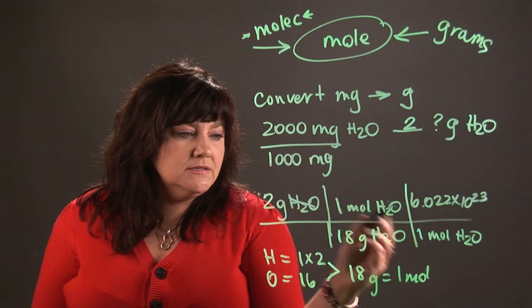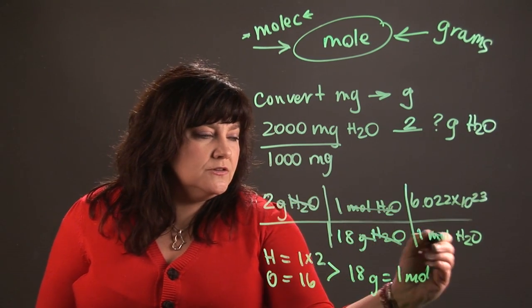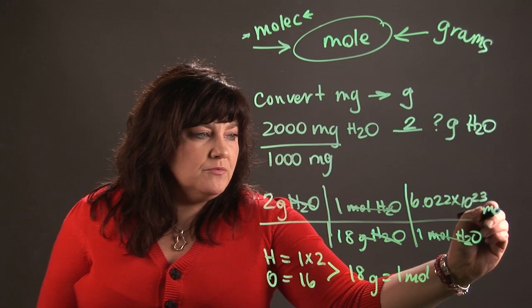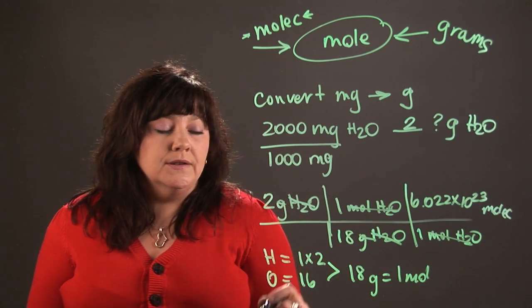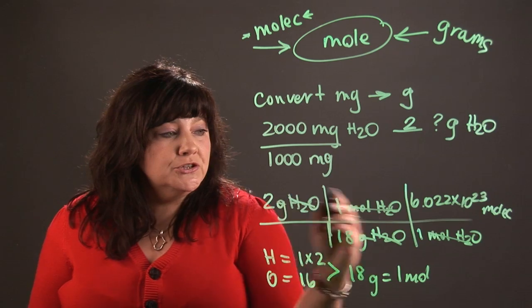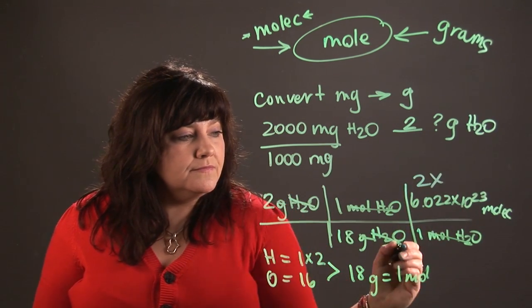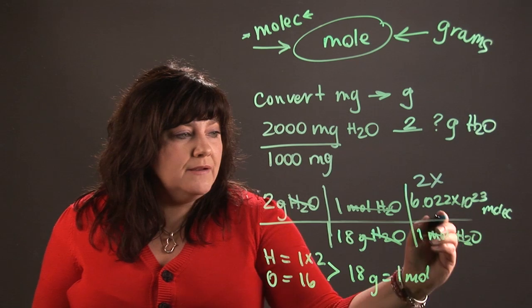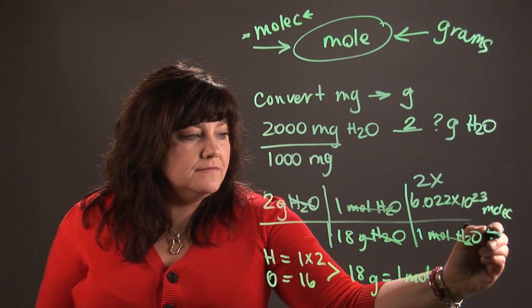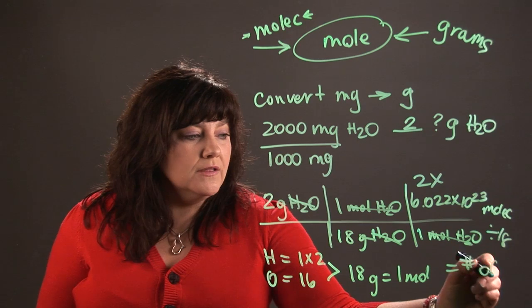I'm going to check my units, those cancel, those cancel, and I'm going to be left with molecules, which is what I want. Now all I have to do is the math. So I'm going to multiply 2 times Avogadro's number, and then I'm going to divide by 18. And that's going to give me my number of molecules.